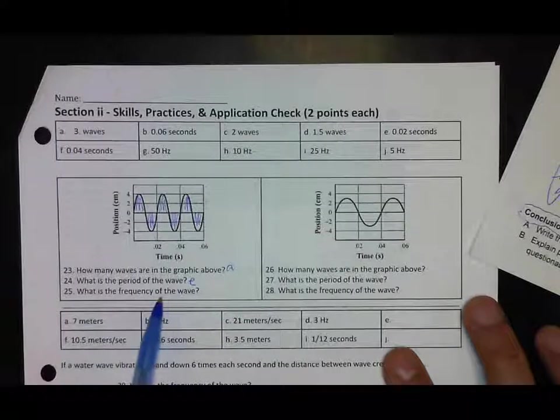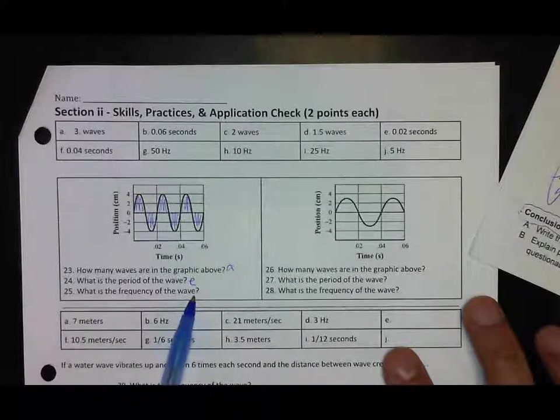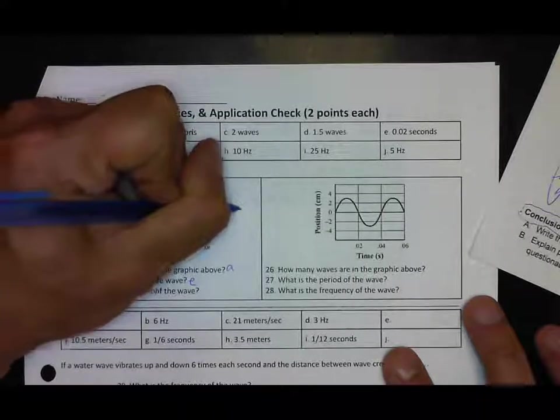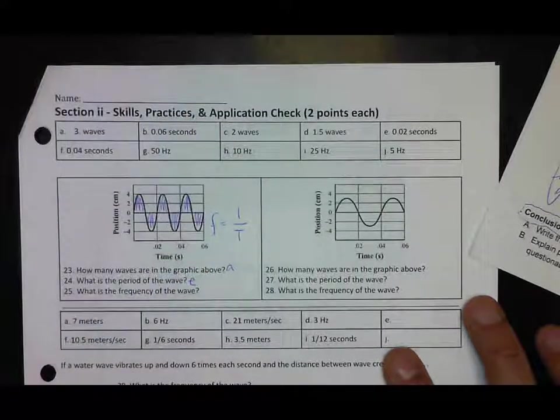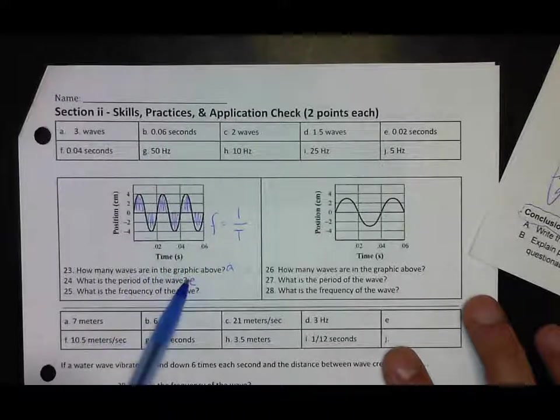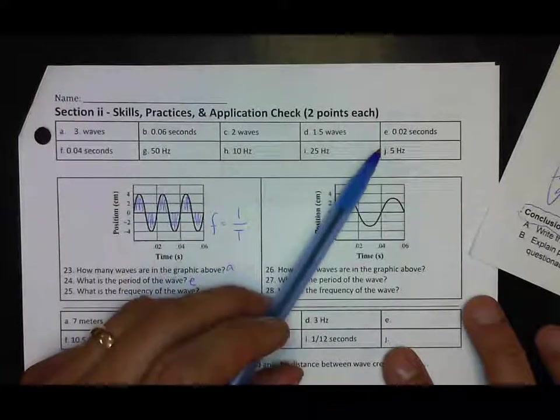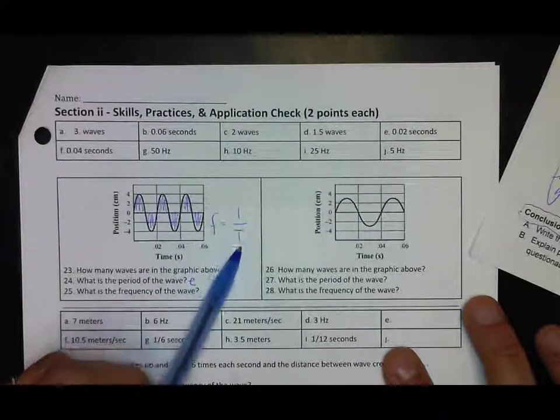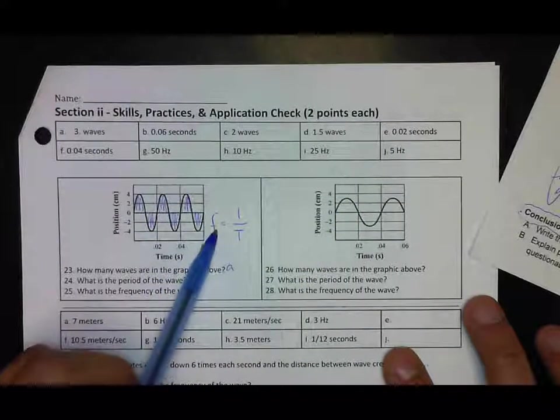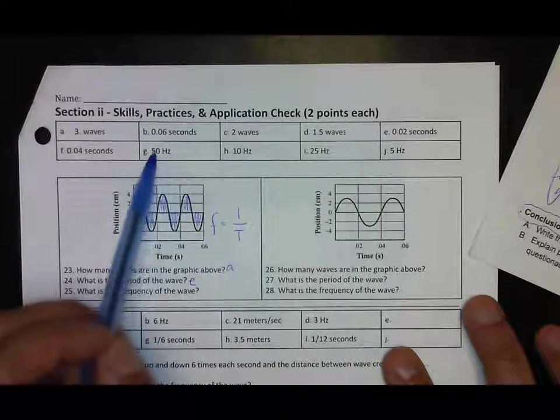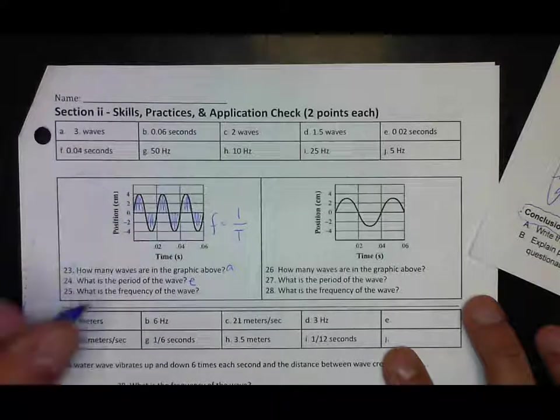What is the frequency of the wave? If you look at your notes from Monday, frequency is equal to one over the period. The period we just calculated to be 0.02. So if I take one divided by that number, I'm going to get a frequency, and I believe that frequency should be 50 hertz.